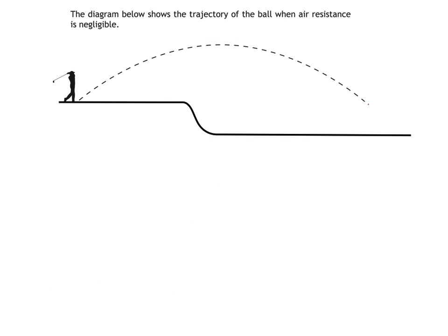In this example, we would find the time to maximum height as before, using our initial vertical velocity, and the vertical velocity at maximum height, 0 meters per second. We'd then need to find the time for the ball to drop from its maximum height to the ground.